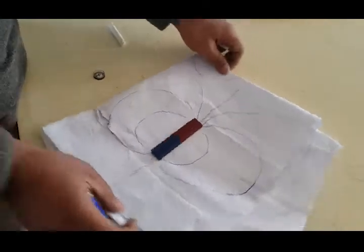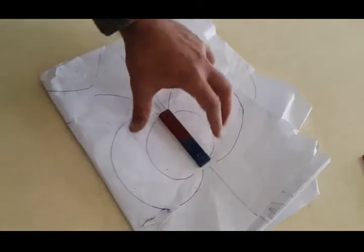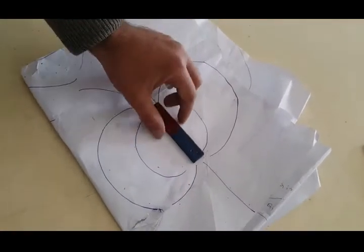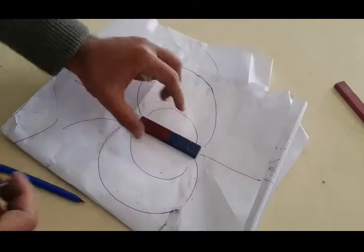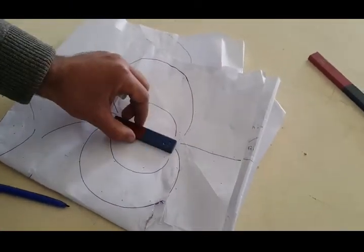You see very clearly this is the tracing of magnetic field lines of the permanent magnet with the help of compass, and the shape of the magnetic field lines of this permanent magnet is like this.